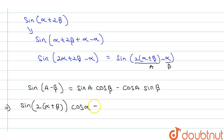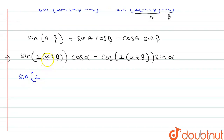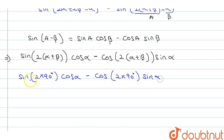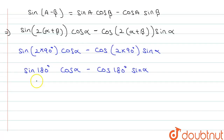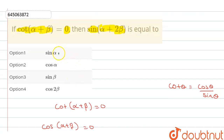Using the sine subtraction formula: sin(2(α + β) − α) = sin(2(α + β))·cos α − cos(2(α + β))·sin α. Since α + β = 90°, we get sin(2 × 90°)·cos α − cos(2 × 90°)·sin α = sin(180°)·cos α − cos(180°)·sin α = 0·cos α − (−1)·sin α = sin α. So from the options, option number 1 is correct. Thank you.